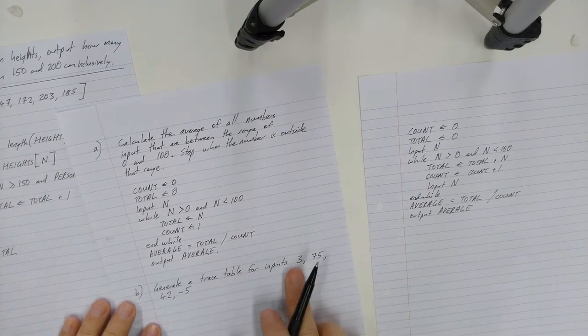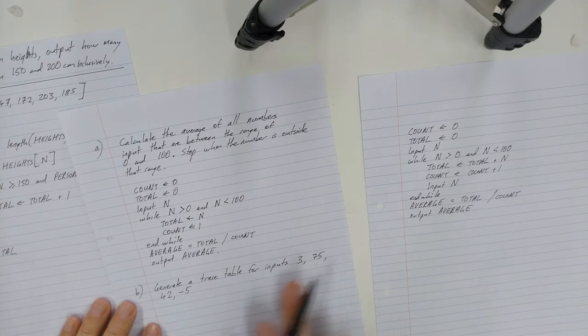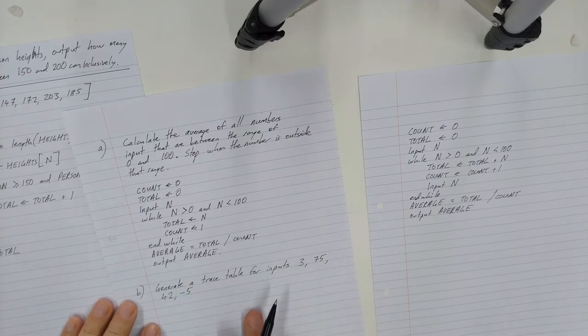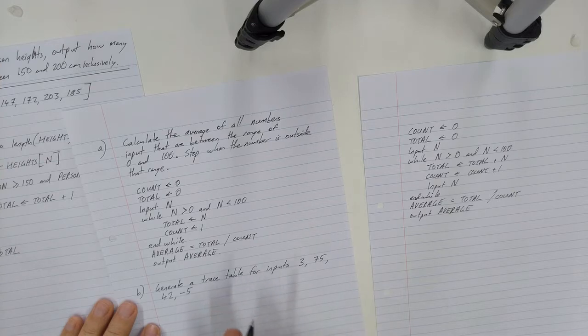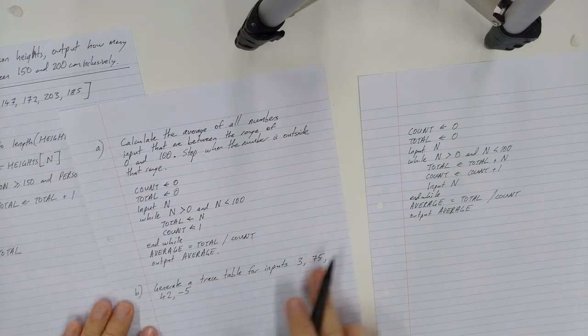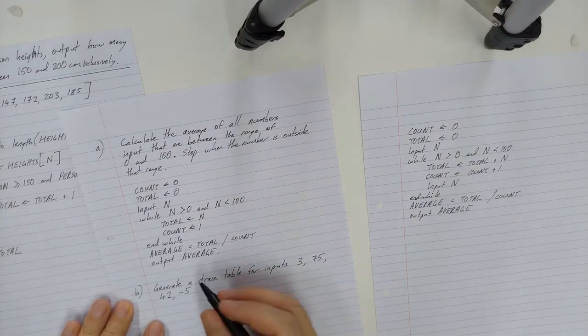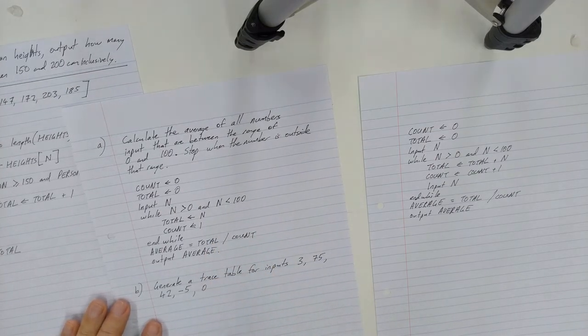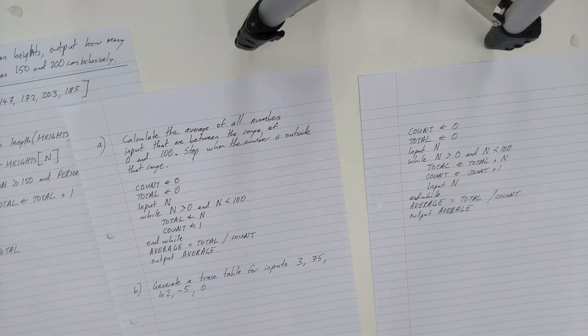So I've said here generate a trace table for the inputs 3, 75, 42, minus 5. Now in generating your test data for a trace table, you should generally make sure you can test for edge cases and your extreme cases and your boundary cases. So make sure you do that. I haven't done that here, so this really should have a 0 and 100 and 101 and 99 on it, just to be testing the boundaries. But for now let's just carry on.